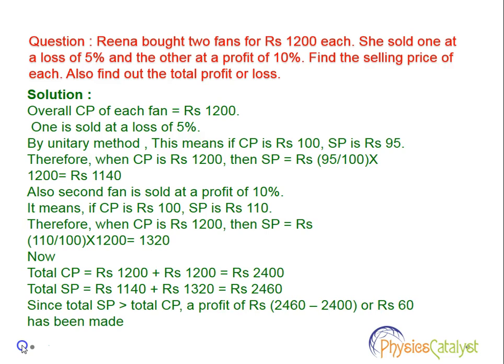Total selling price would be 1140 plus 1320, which is equal to rupees 2460. Since total selling price is greater than total cost price, a profit of 2460 minus 2400, which is equal to rupees 60, has been made. So profit and loss problems can be solved like this.